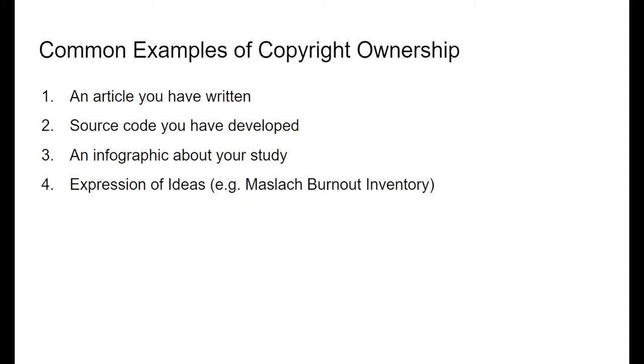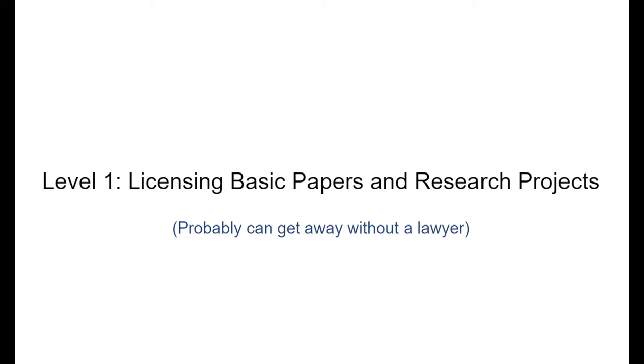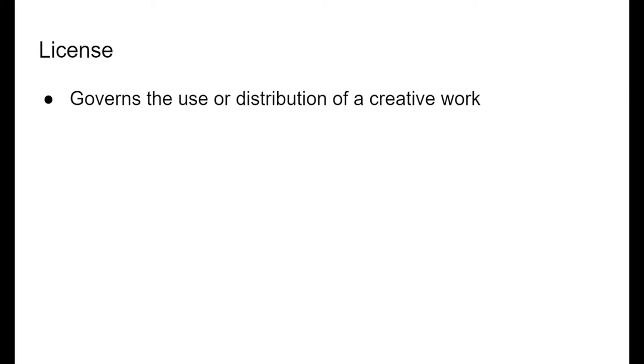Now that we have a basic understanding of copyright, let's get into level one: licensing papers and research projects — where we can probably get away without a lawyer. We have all these rights, and because we have them, we need a way to let other people use them. This is what's known as a license. Licenses essentially govern the use and distribution of a creative work, allowing another person to use it in some capacity or release it to the world.